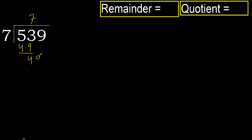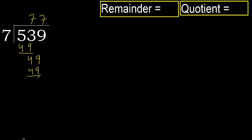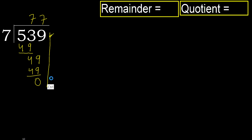Next, bring down 9 to get 49. 7 multiplied by 7 is 49, which is not greater. 49 minus 49 is 0. There is no next digit, therefore we finish.